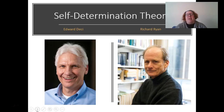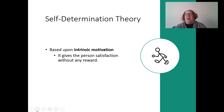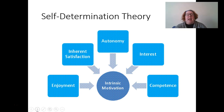Finally, self-determination theory with Deci and Ryan — probably the most complex of the humanist theories, the most modern, and with the most research support. It's based on the idea of intrinsic motivation: what gives a person satisfaction without a reward? Without pay or candy, what motivates someone because of something internal — the activity itself is the reward. It has five components that lead to intrinsic motivation: enjoyment, inherent satisfaction, autonomy, interest, and competence.